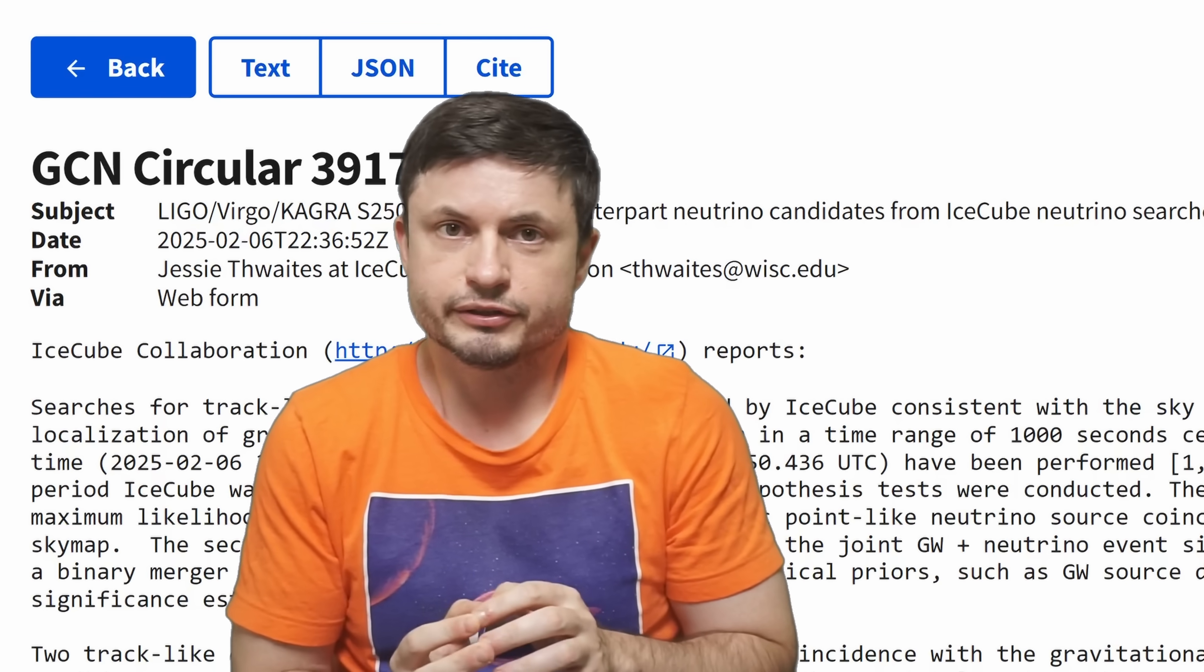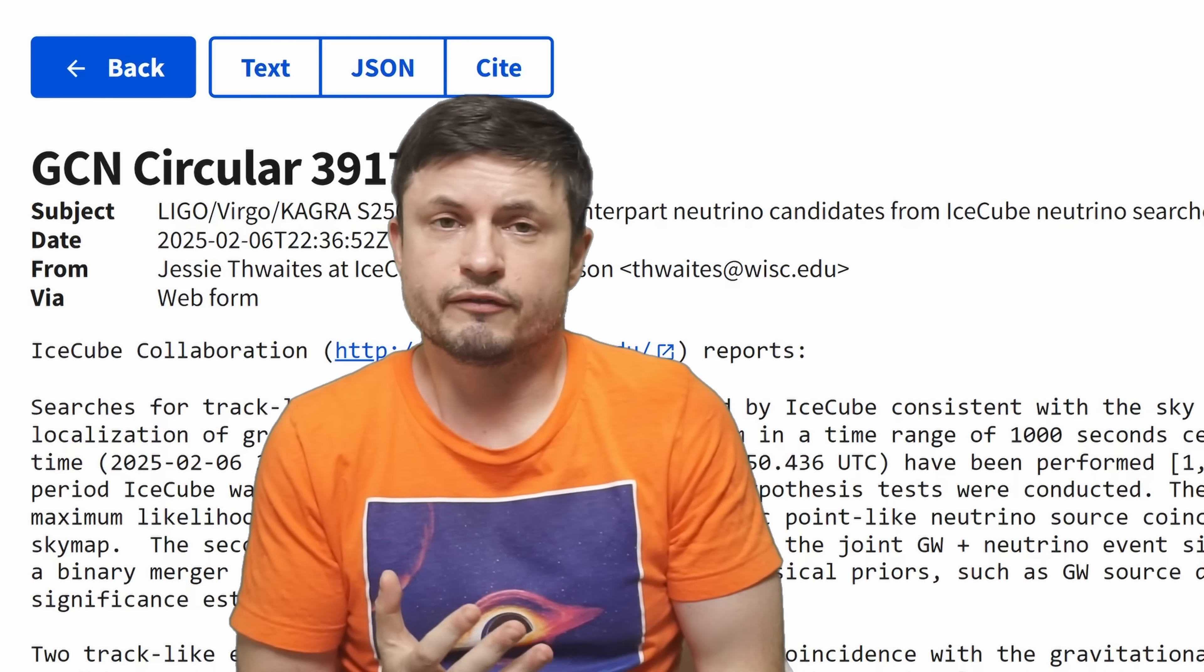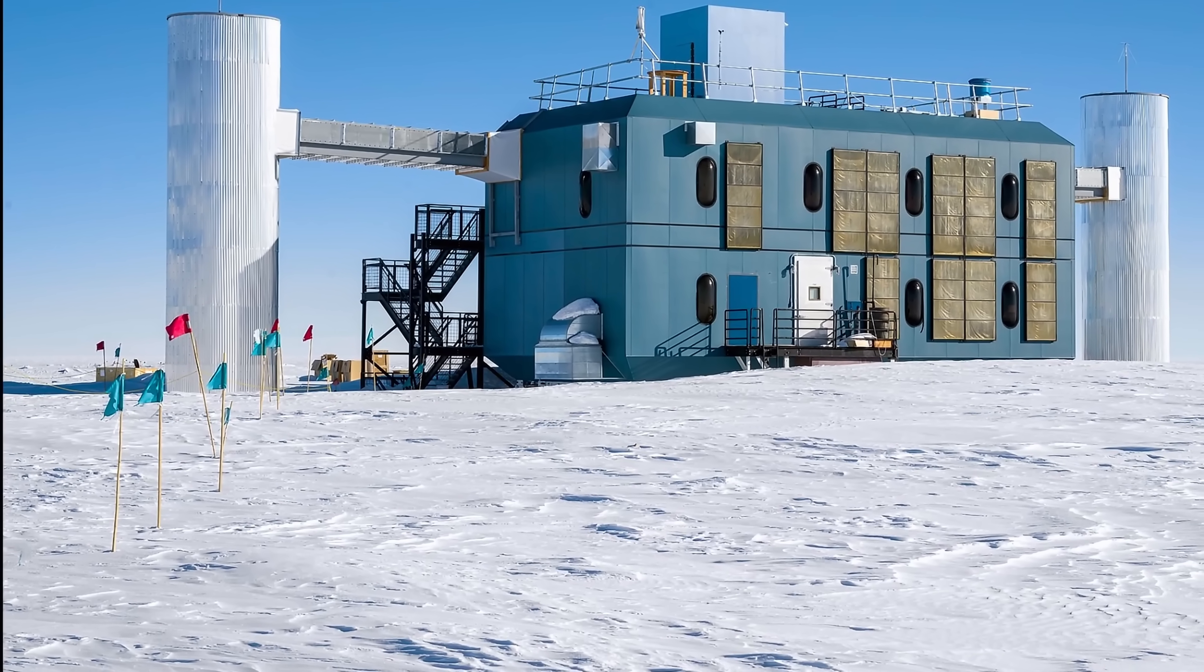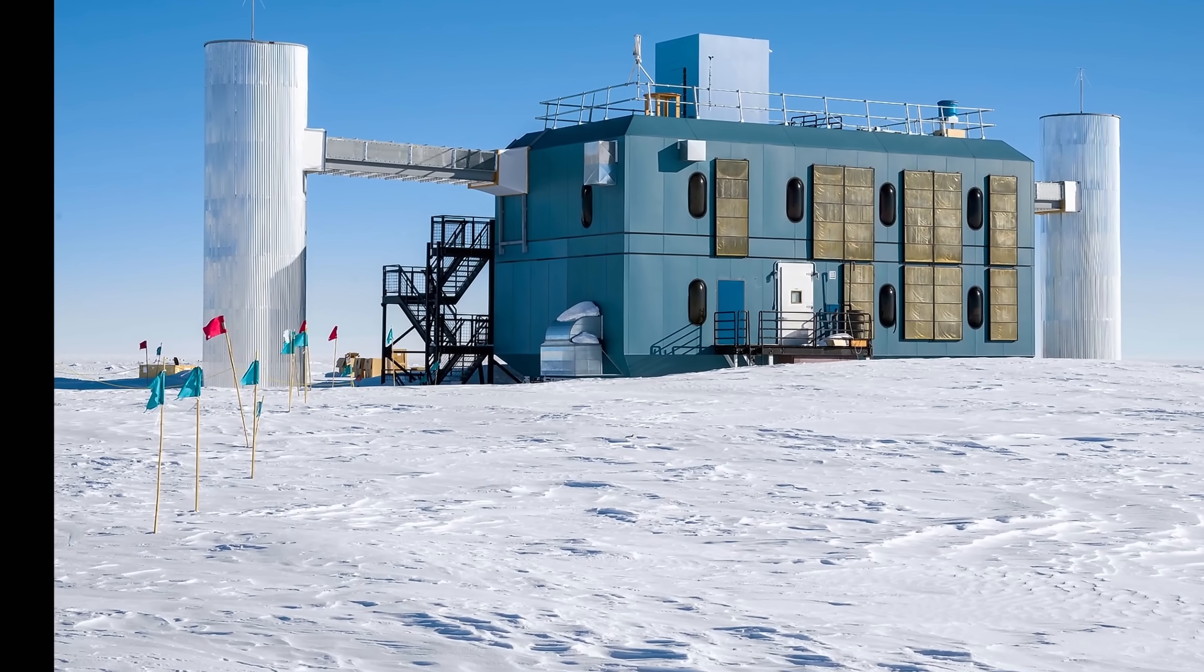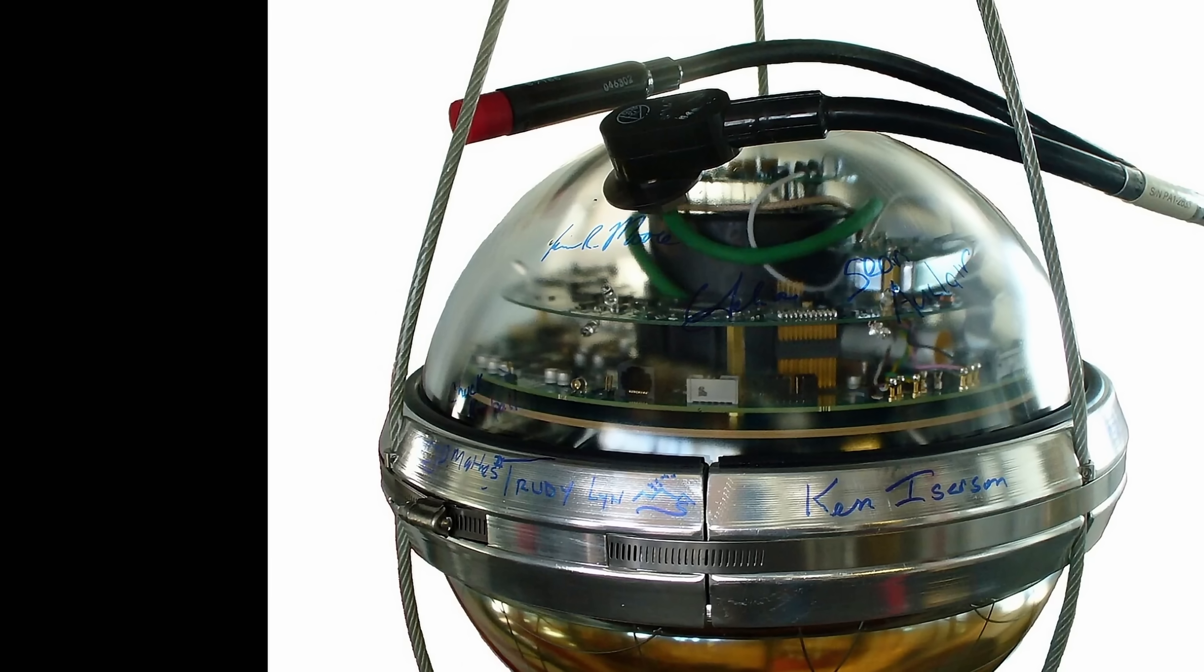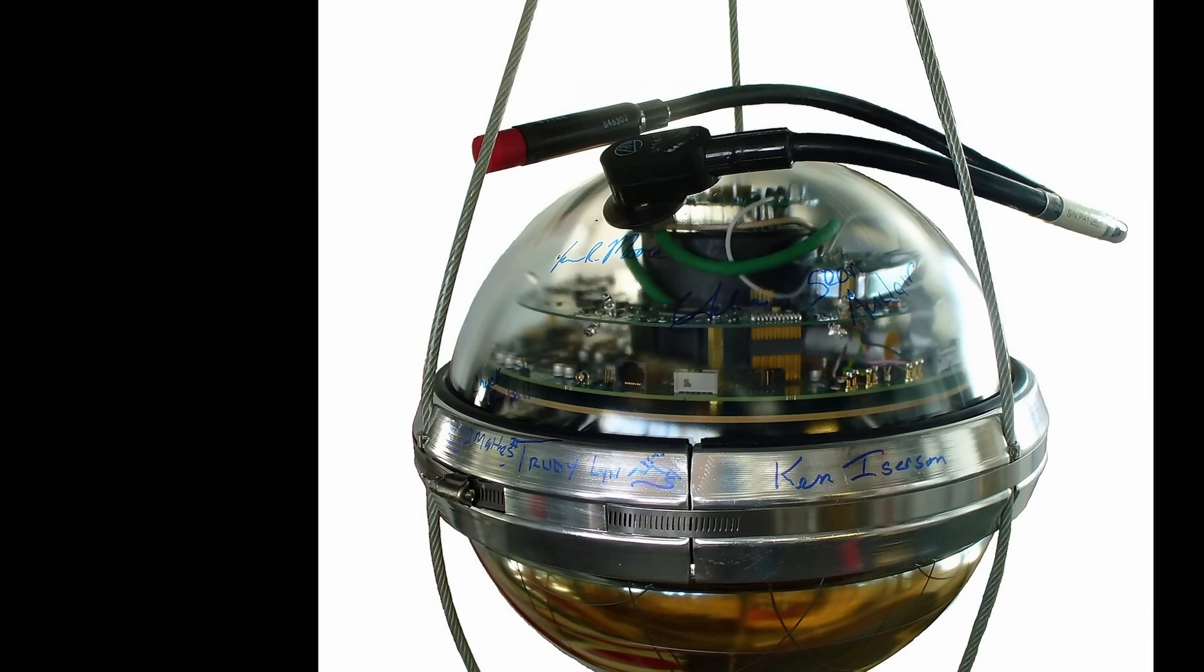But completely independently of this, within just a few minutes of this event, there was actually an unusual alert from something entirely different. Here there was an alert from the IceCube Neutrino Observatory in Antarctica. An enormous facility, whose schematic you see right here, that uses thousands of these unusual digital optical modules to detect neutrinos. We've discussed this facility in one of the videos in the description and you can basically learn about how it operates.